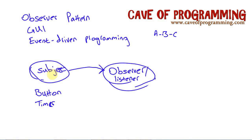Of course in a Java program nothing's literally listening to anything, so we have to find some way to make this work. If you're writing both objects yourself, you could pass a reference to the observer into the subject, and the subject could just call a method in the observer. But that is often bad practice because you want to avoid having these two objects tightly coupled. Ideally you don't want the subject to know that the observer exists, and yet you do want to be able to pass a reference to the observer to the subject.